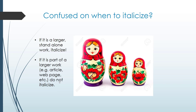If you're confused about when to italicize, think of Russian nesting dolls. If it is the big mama doll — the main standalone work that contains all the other pieces, like a journal, a book, or a website — that is what you italicize. Your journal articles, newspaper articles, and book chapters fit inside the mama doll. An article comes out of a journal; a book chapter comes out of a book; a web page comes off a website. Those smaller pieces do not get italicized.